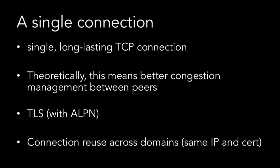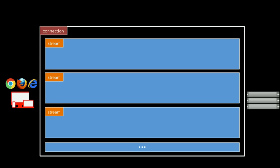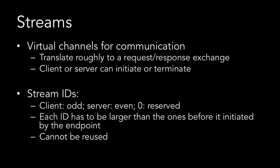There's also a provision in the protocol to coalesce connections. If you have requests going to two different hostnames that map to the same IP address and have the same certificate, you can send all those things over a single connection — with the goal of pushing everything over a single connection for better congestion management. Over that connection are things called streams — essentially virtual communication channels between client and server. They can concurrently exist over the connection, and either side can initiate them. Each stream has a stream ID; client-initiated streams have odd IDs, server-initiated have even IDs, and stream ID zero is reserved for management.